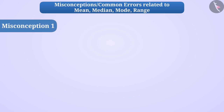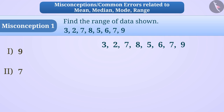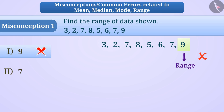Misconception 1. Find the range of data shown. Some children have the misconception that the largest figure or number in a group of data is called range. But this is wrong. Hence, option 1 will be the wrong answer.